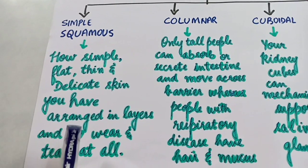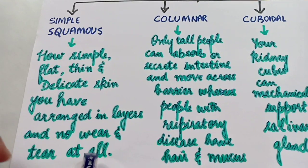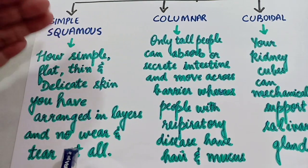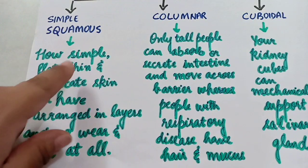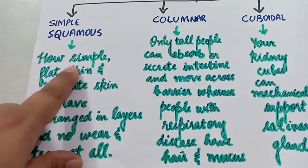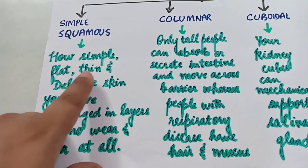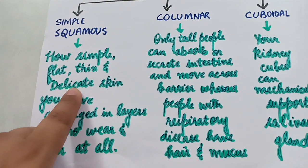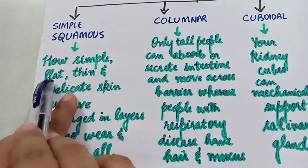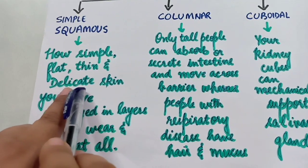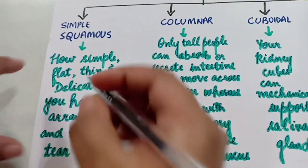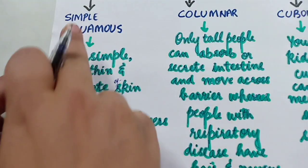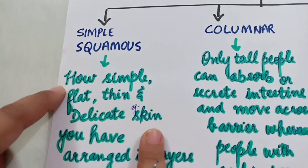Now, how does this sentence tell you the basic characteristics of simple squamous? Simple squamous epithelial tissues are simple, they are flat in nature, and they have thin and delicate cells. Simple, flat, thin and delicate cells are present. For example, skin — the example of simple squamous epithelial tissue is skin.